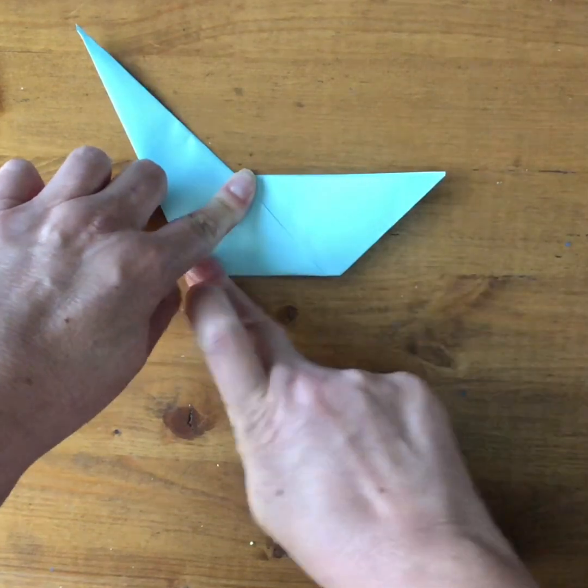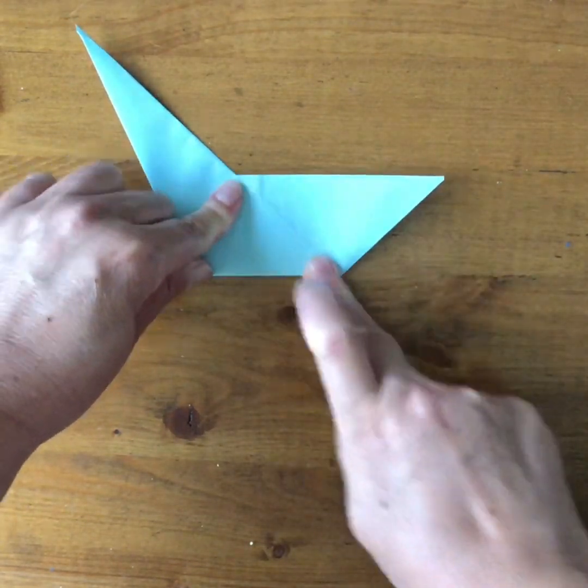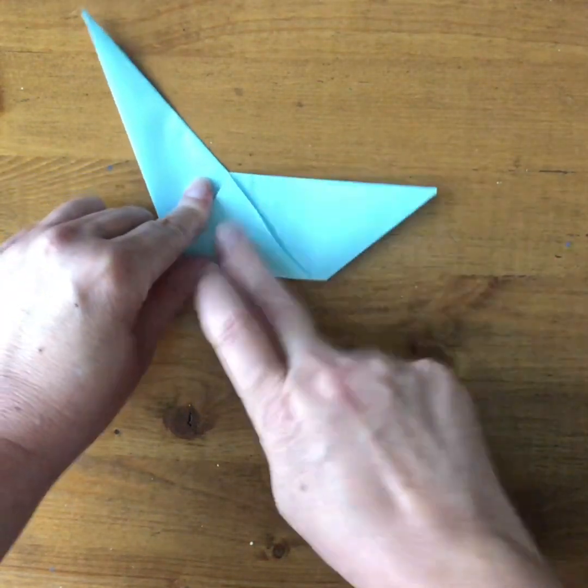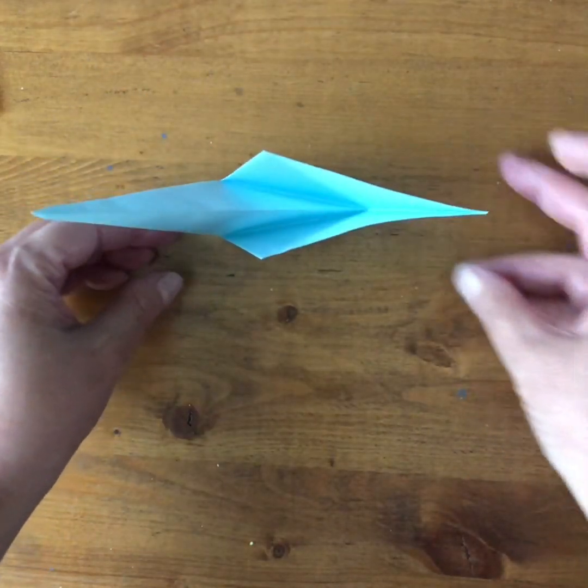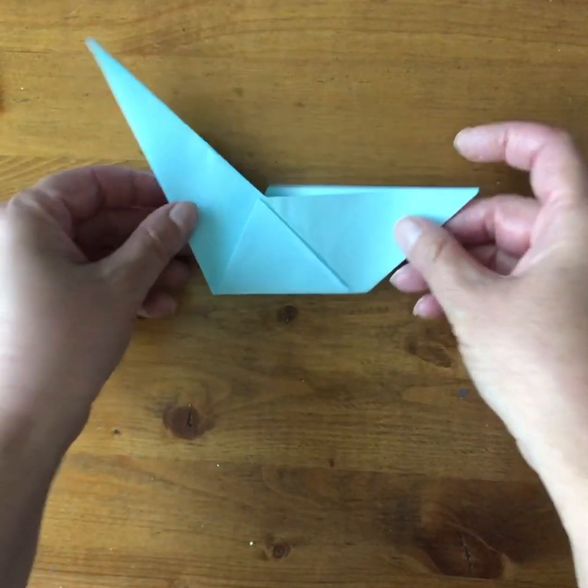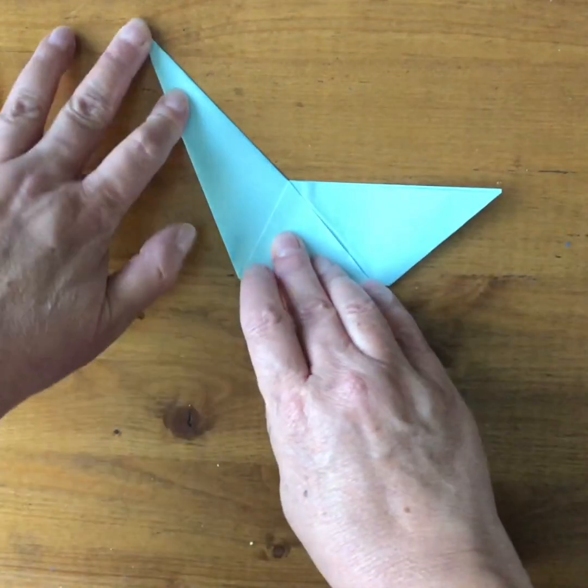So I crease this part and I crease this part, and this is the body and the wings of the bird. It can sit up like this so it can be a swimming bird. And then I can add a head.